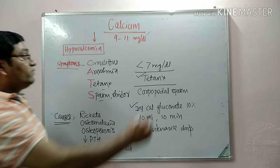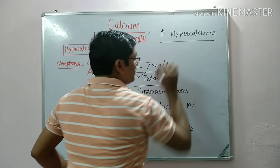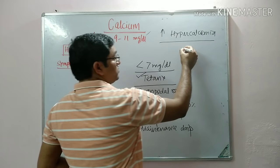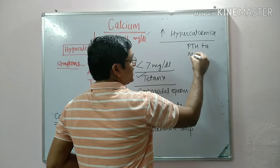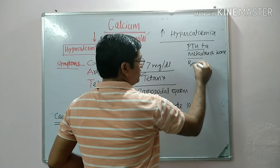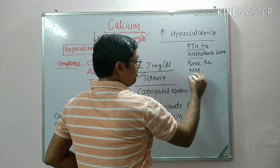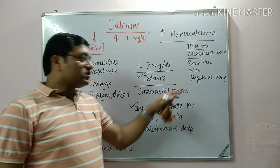When serum calcium level increases beyond 11 mg per deciliter, it is known as hypercalcemia. Causes include parathyroid tumor, hyperparathyroidism, secondary metastasis in bone, bone tumor, multiple myeloma, and Paget's disease of bone, among others.